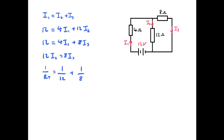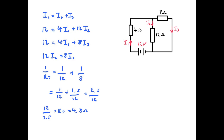Now let's work out the total resistance of our circuit. We've got the 12 ohms and 8 ohms — although it might not appear like it, they're actually in parallel. So we can work out their total resistance, which is 4.8 ohms. Adding that to the 4 ohms on the left, we get a total resistance in our circuit of 8.8 ohms.